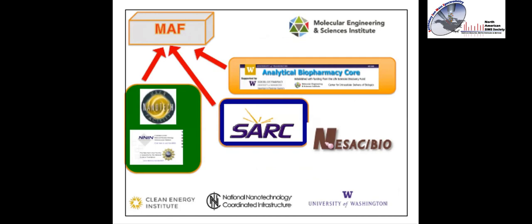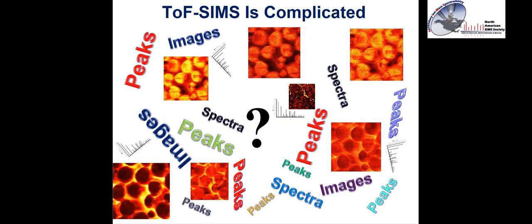We all know that TOF-SIMS is complicated. The data is very rich — it has both spectra, images within those spectra, peaks, and all sorts of information. We have to somehow figure out what is the important information within that data set and be able to extract and summarize it in a way that's understandable.